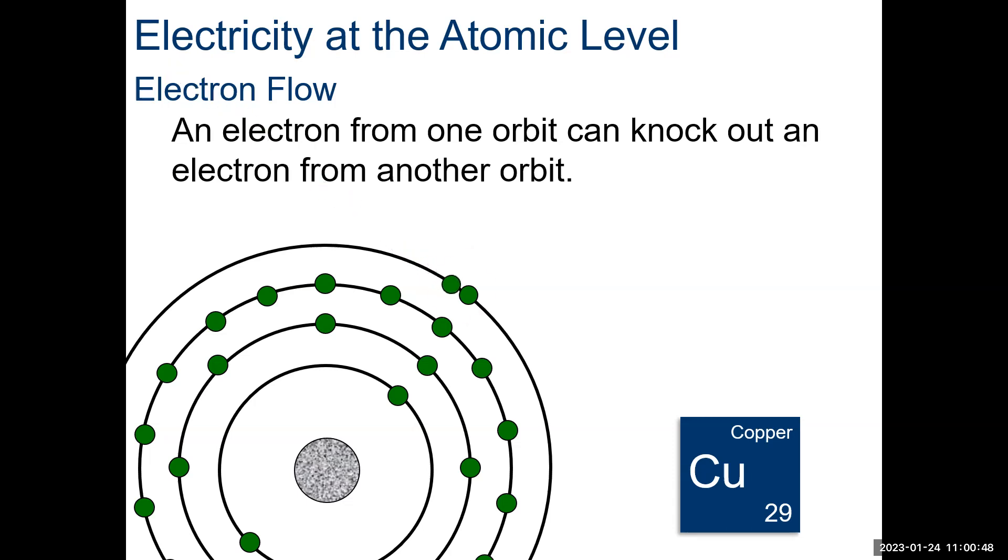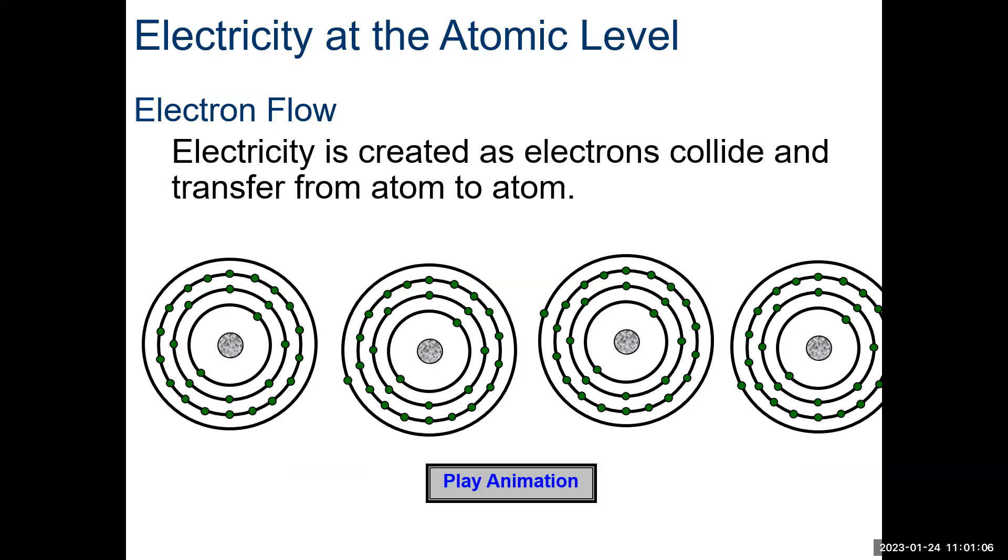What happens is an electron travels in and knocks it out very simply and takes its place. When an atom loses an electron, it seeks another to fill the vacancy. It actually attracts these electrons when one gets knocked out. Electricity is created as these electrons collide and transfer from atom to atom. The atom doesn't move. It just transfers these electrons from atom to atom.